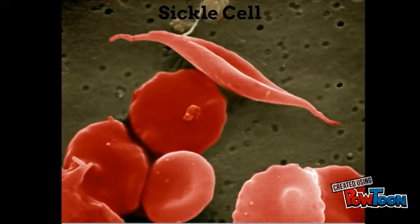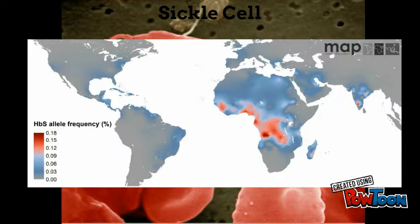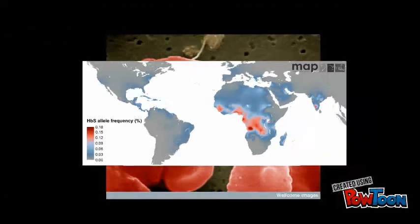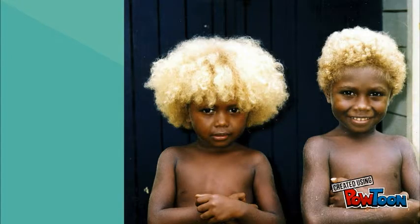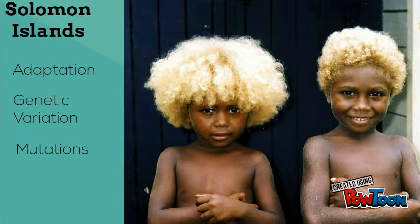Sometimes cited as being correlated with race, sickle cell is actually an adaptation formed against high prevalence of malaria. Another example of a gene mutation is found in the people of the Solomon Islands, who have dark skin and blonde hair.